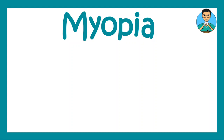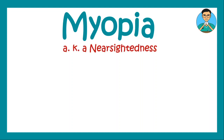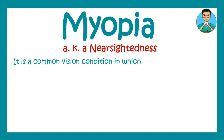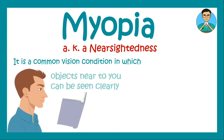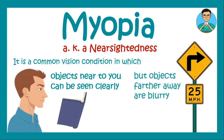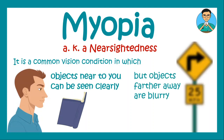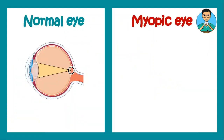Hello everyone, the Nerd Medic here. In this video let us learn about myopia, which is also known as nearsightedness. It is a very common vision problem of your eye where you can see objects near you very clearly, whereas objects far away appear blurry. Now let us understand the optics behind this condition.